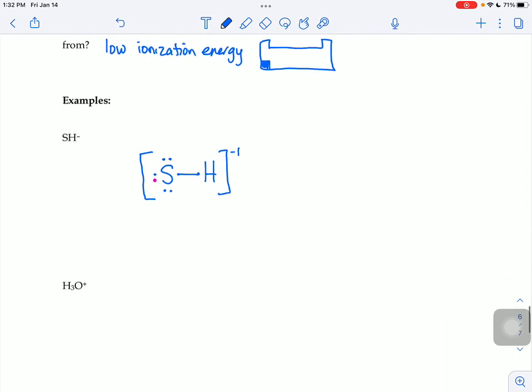If we have a cation, like the hydronium ion, H3O+, we draw that as symmetrically as we can. And I'm going to draw each element the way we normally would. Hydrogens get 1, oxygens get 6.